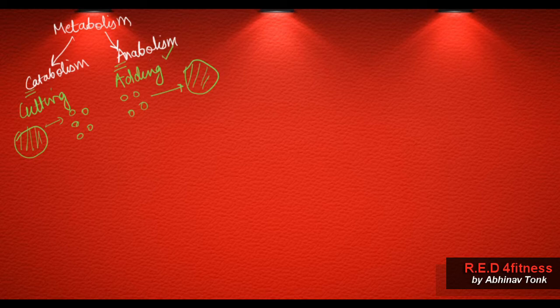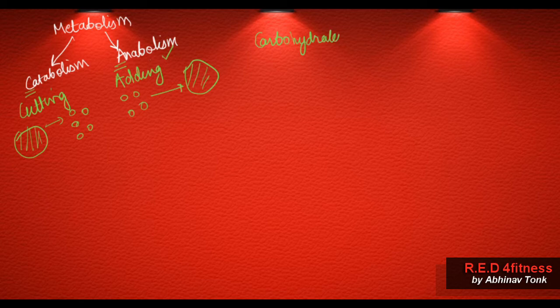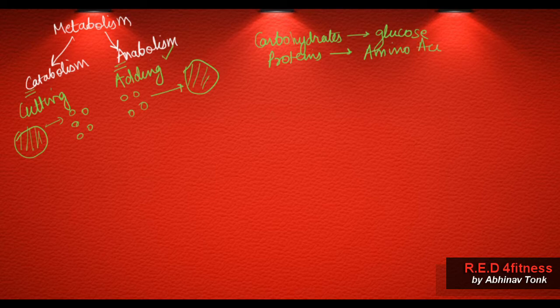Food majorly contains carbohydrates, fats, and proteins. The end result of their breakdown is: carbohydrates are broken down into glucose, proteins are broken down into amino acids, and fats are broken down into fatty acids.